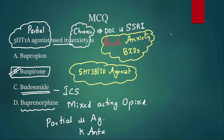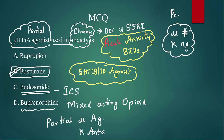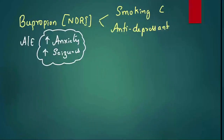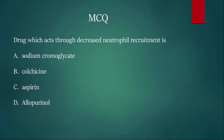Can you comment on a mixed-acting opioid which is a mu antagonist and kappa agonist, whose name starts with 'P' or 'penta'? Guess that drug in the comments. Now let us move to the next MCQ: which drug acts through decreased neutrophil recruitment? Options: sodium cromoglycate, colchicine, aspirin, allopurinol.